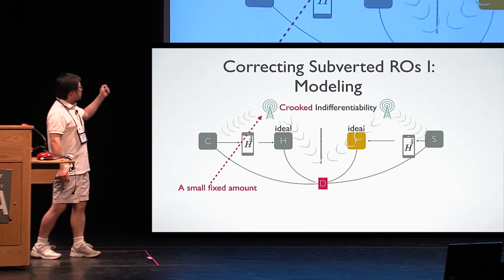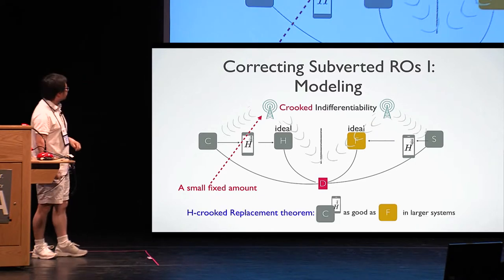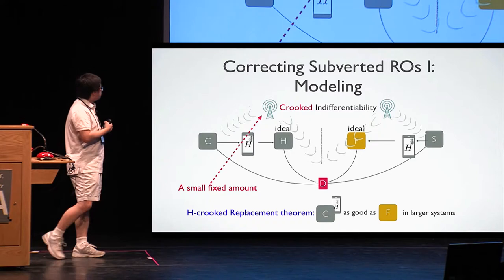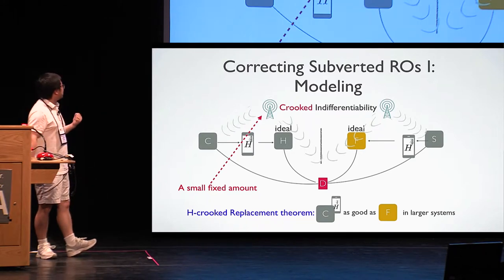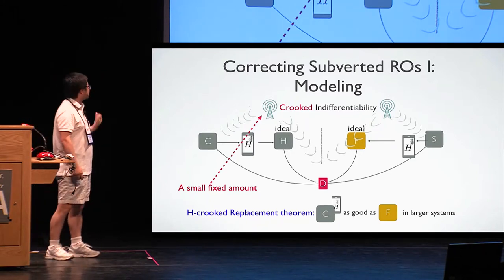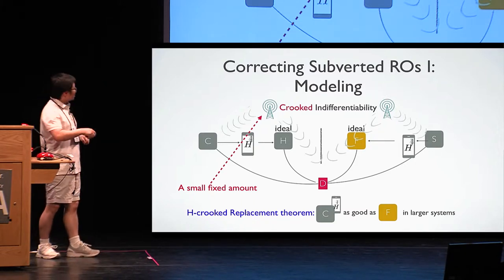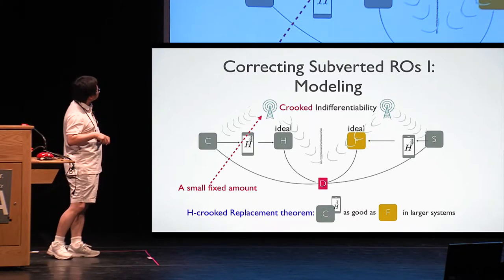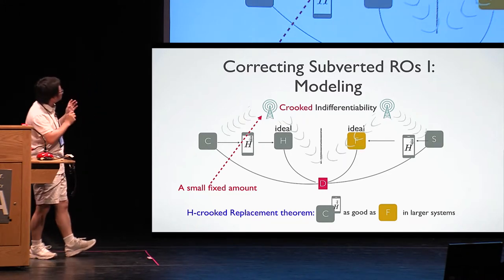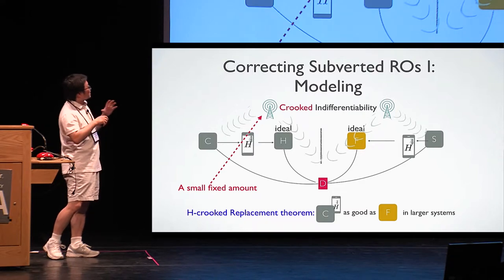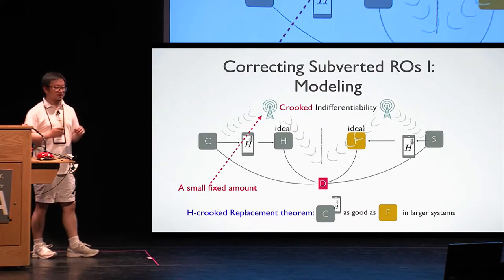Then the distinguisher is going to interact with two worlds again, try to distinguish whether he's talking with the construction using the subverted implementation or still he's talking with the ideal world object. And here, the rule is we only use a small fixed amount. And very nicely, we also show a version, a variant of the replacement theorem, we call crooked replacement theorem.